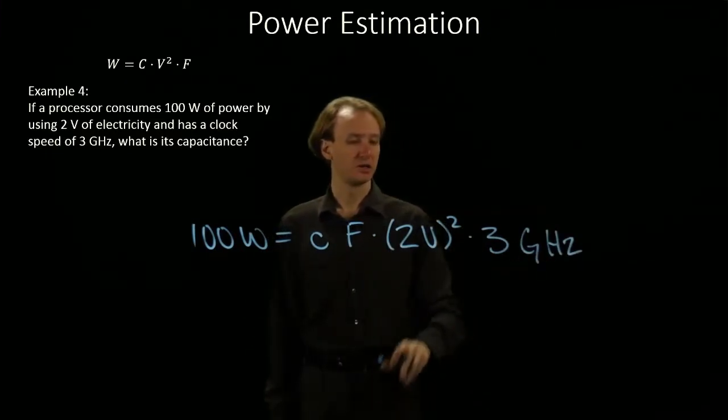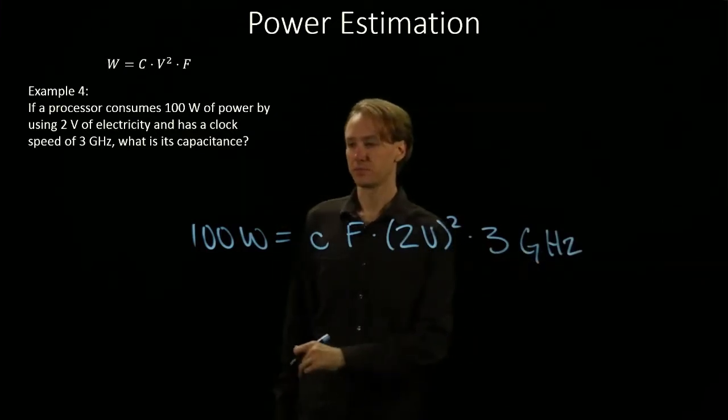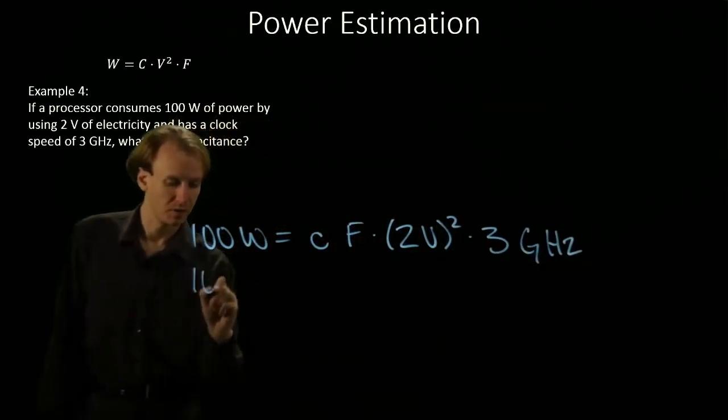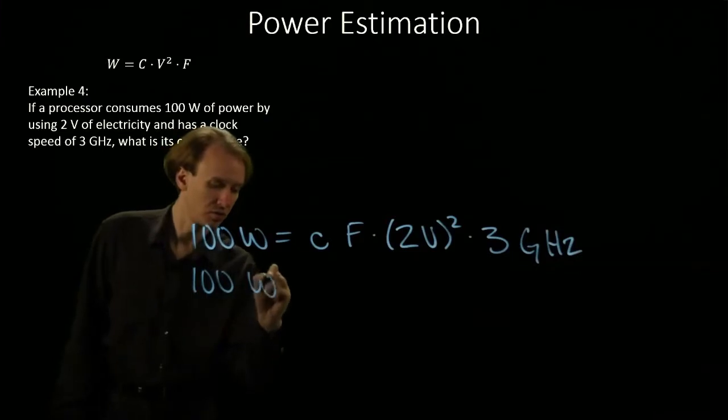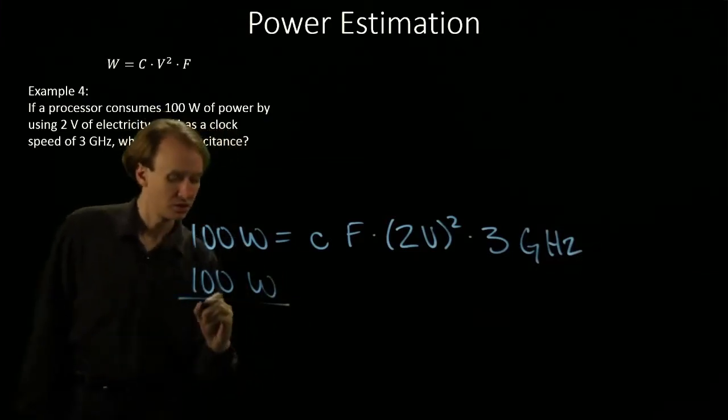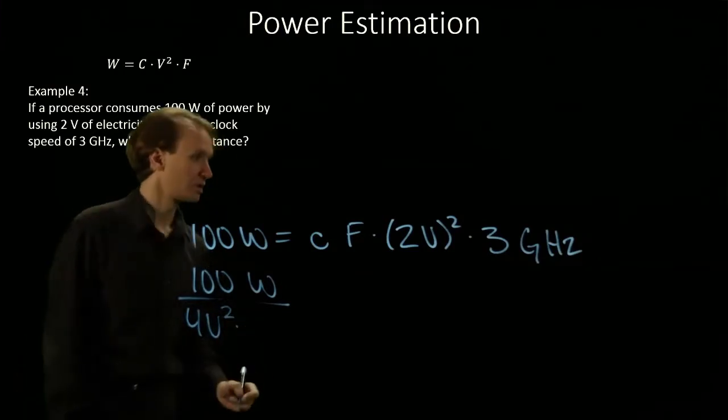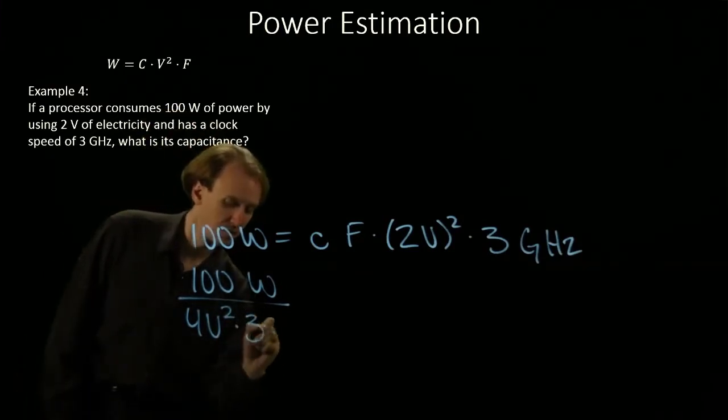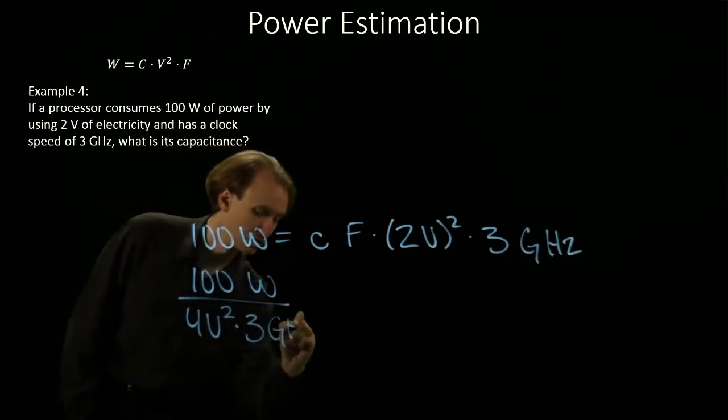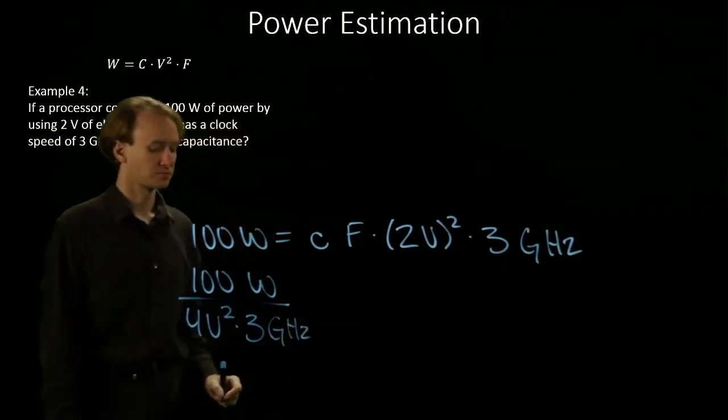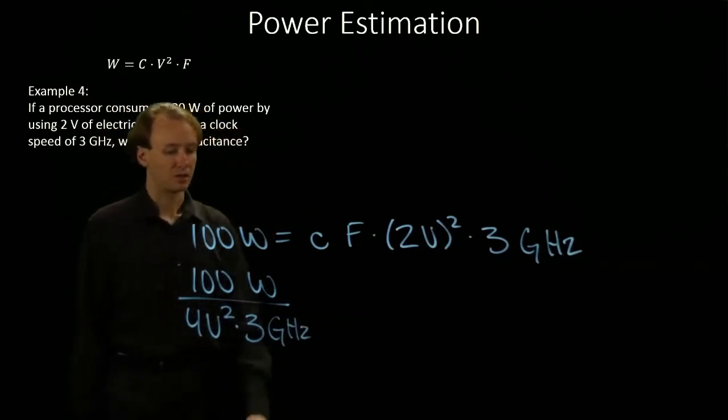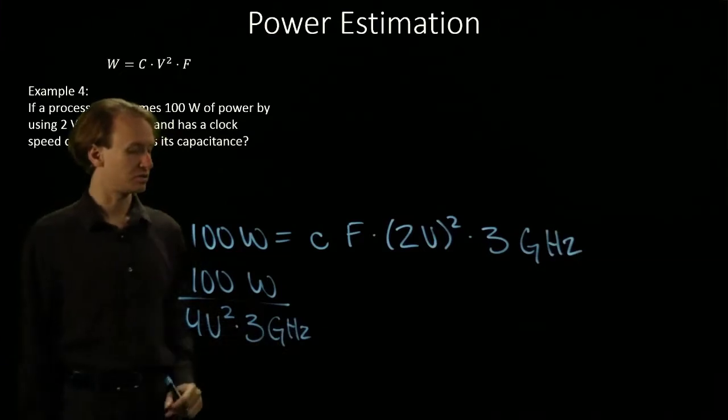So we divide by both of these two terms. 100 watts divided by 4 volts squared times 3 gigahertz. We'll need to change our gigahertz into hertz.